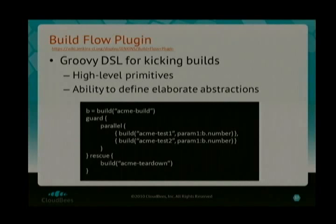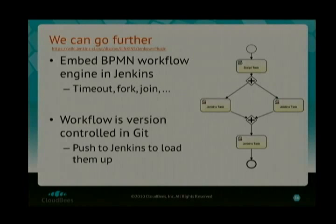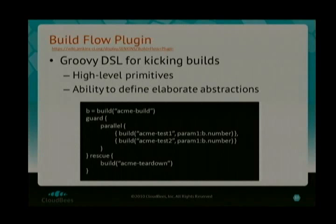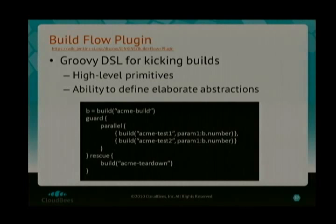If graphical programming is not your taste, there's also a Groovy DSL for doing similar things. Because it's a DSL, it comes with primitives that speak the Jenkins language — like executing a particular job with a single function call — along with parallel execution, try-catch, and so on. It keeps track of everything it's doing and gives you nice visualizations. These things are allowing people to push more and more work to the servers.